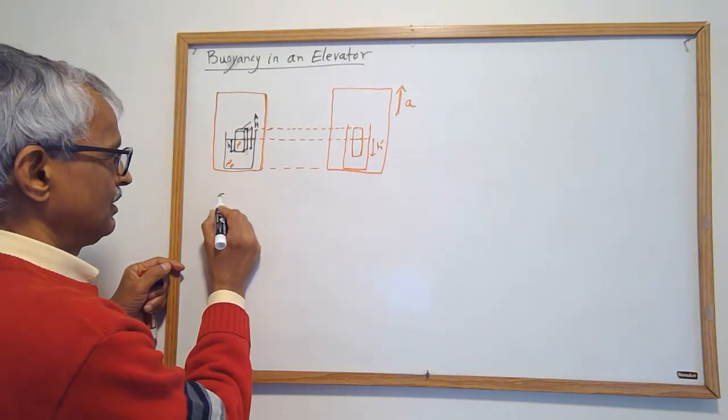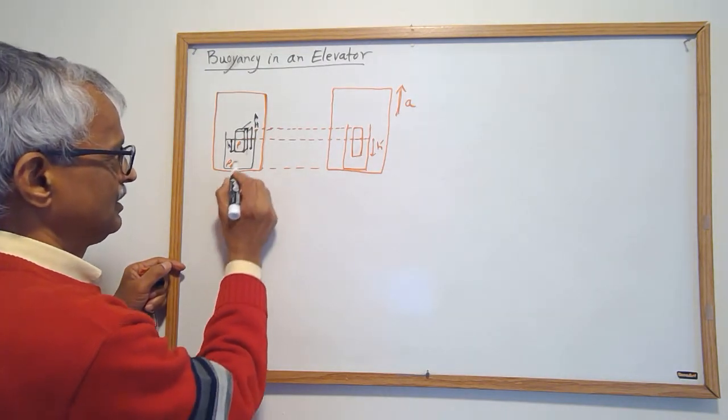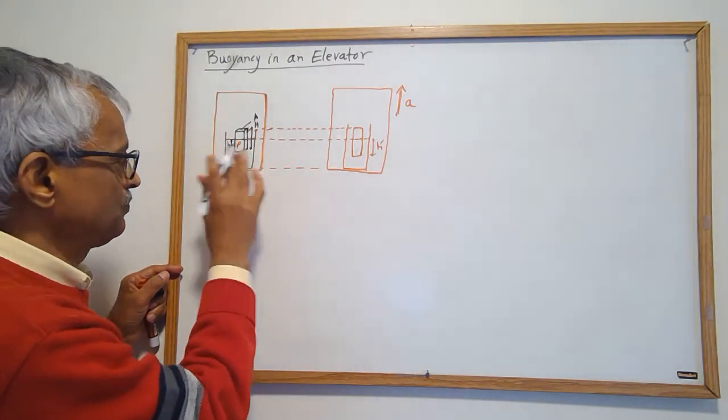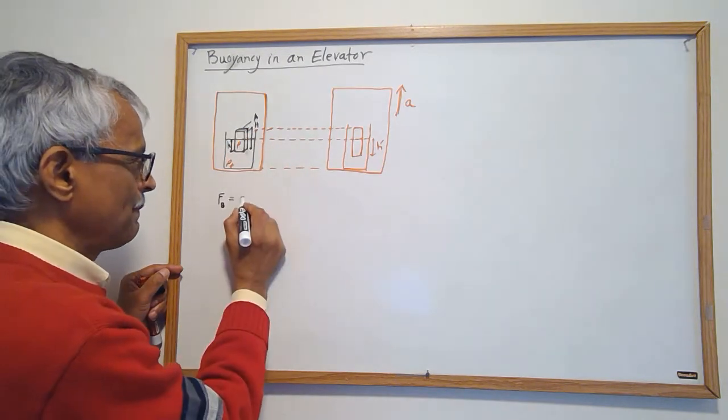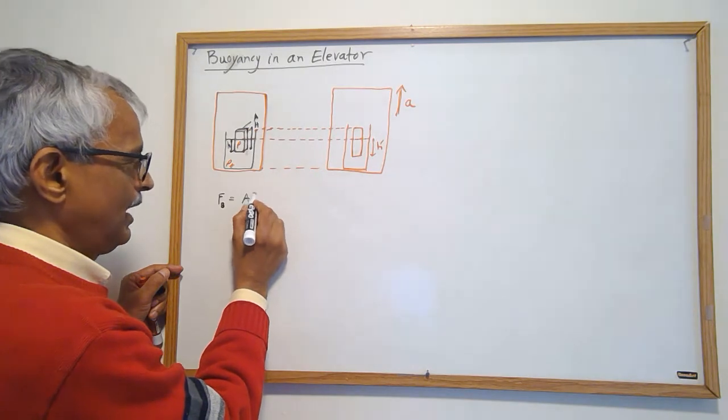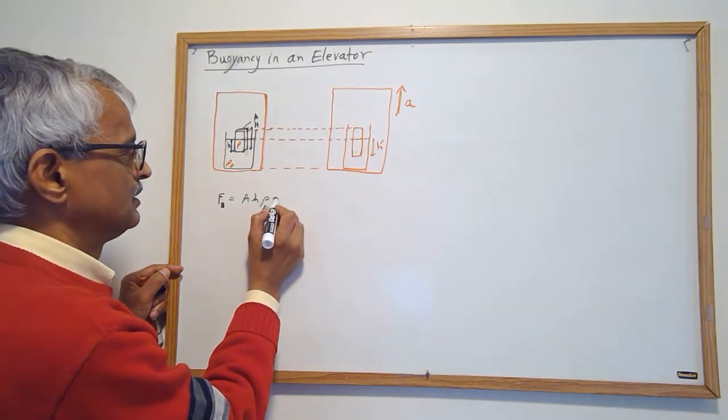Right now the buoyancy is the volume of the displaced fluid. So how much fluid got displaced? The area of cross-section is A, so A times h times ρ fluid times g.